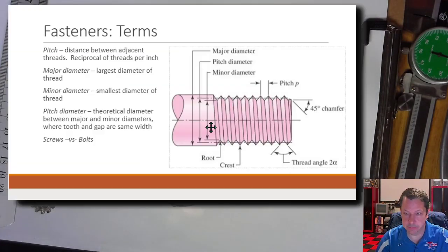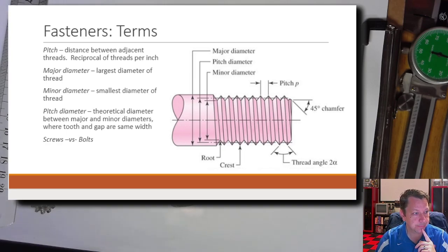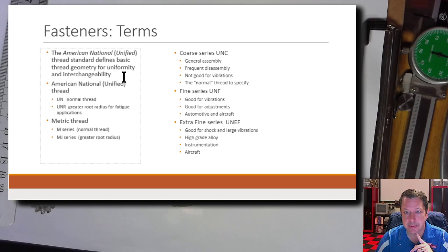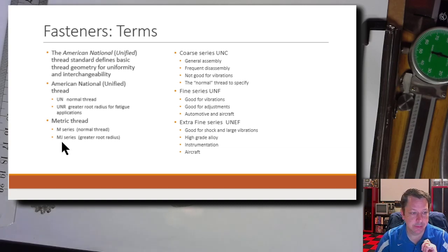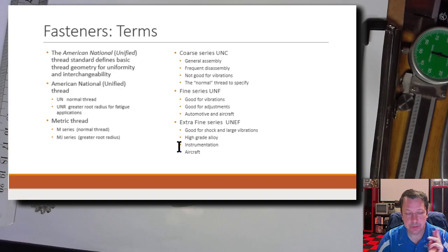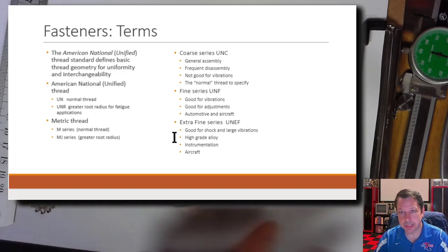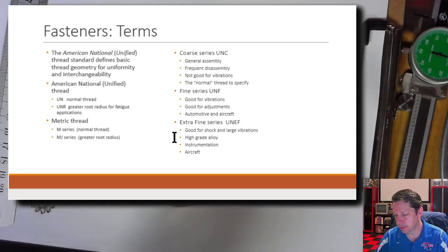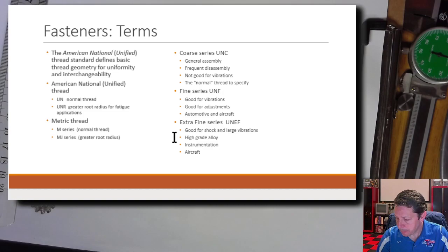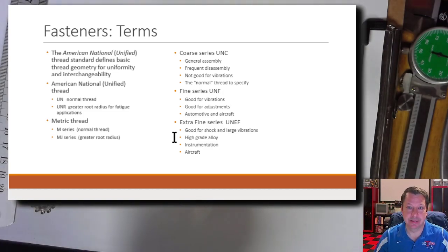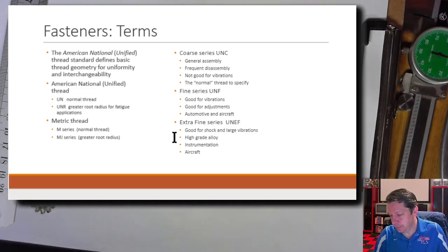These are just general terms. The unified fine and coarse threads are the American ones; metric uses an 'M' prefix and a number. In our class you'll be told what kind of bolt to use — you won't have to guess metric vs. UNC/UNF. Most often you'll be doing analysis on a given bolt configuration: calculating clamping strength or stiffness. Today we're doing stiffness.